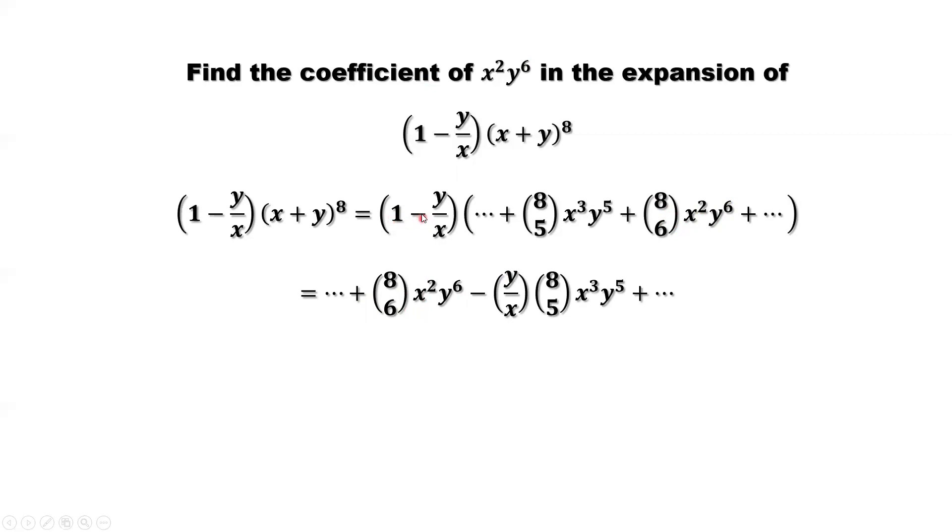So this one. And this one, 1 times this, we don't need it, because that's x³, y⁵. We don't need it. So this term, second one, negative y/x times the first one. Time the first one, that's this times this. So here, you can see y times y⁵, it's y⁶. x³ divided by x, that's x².